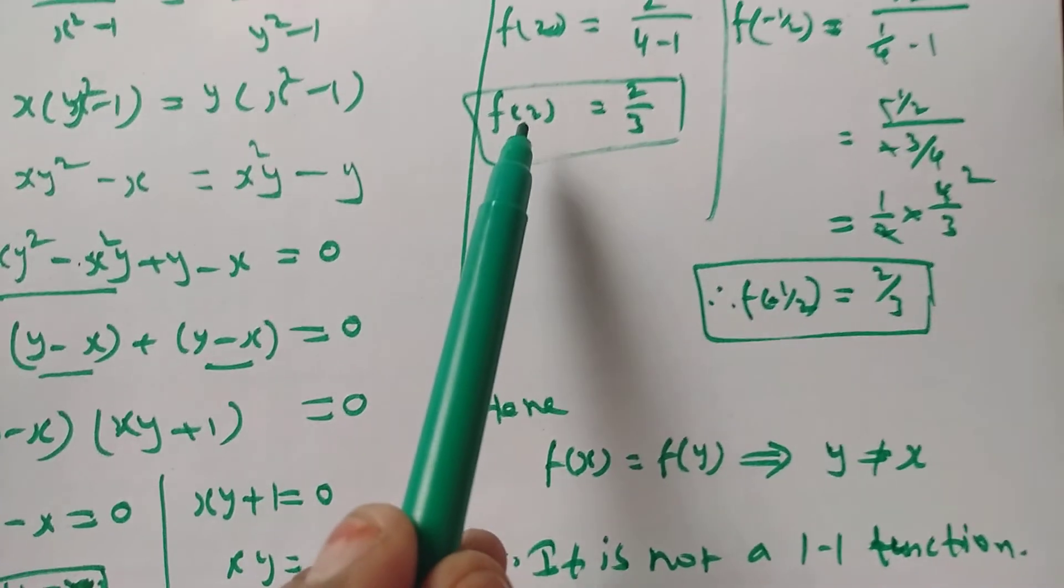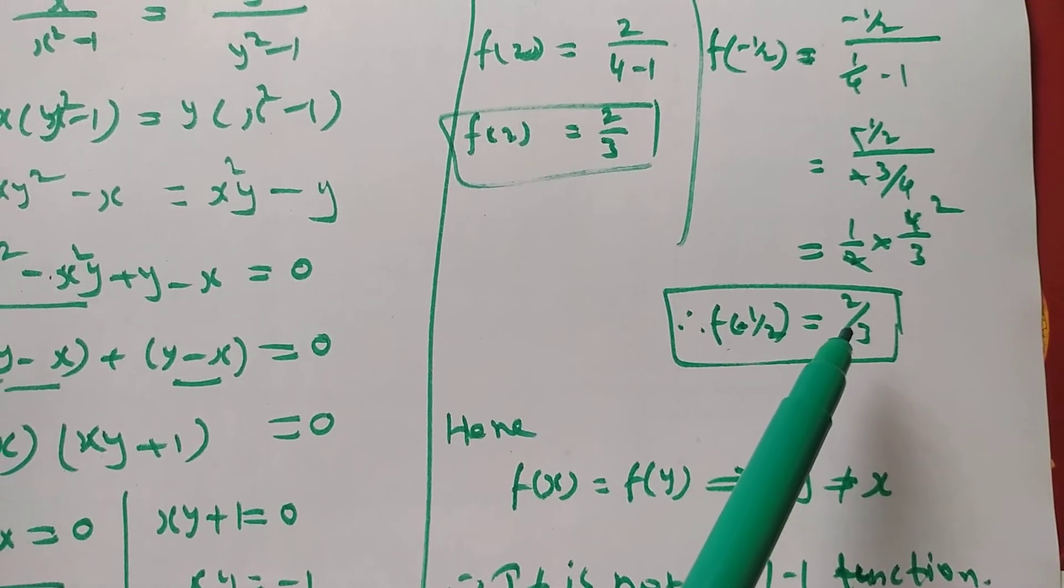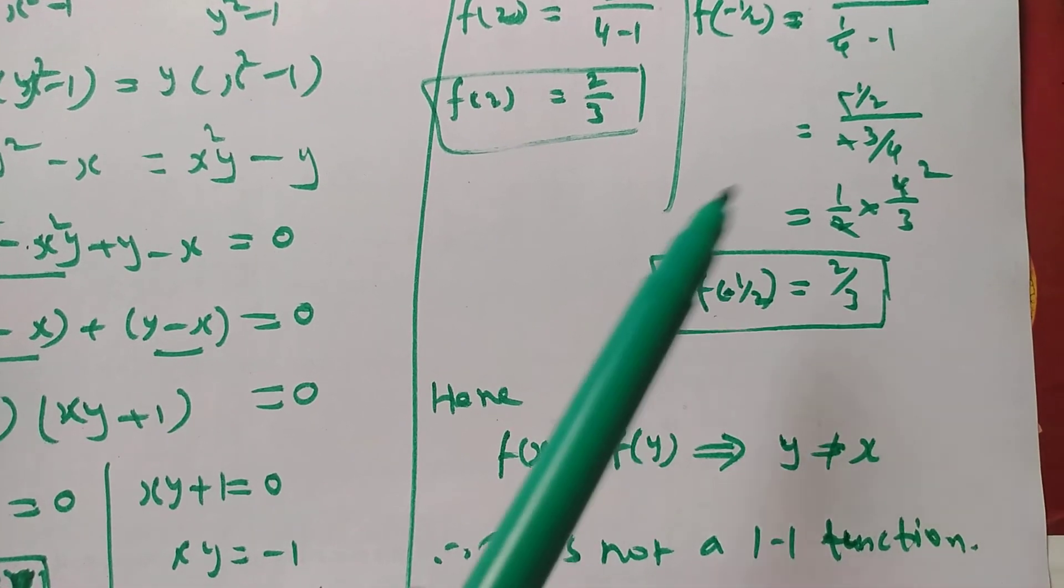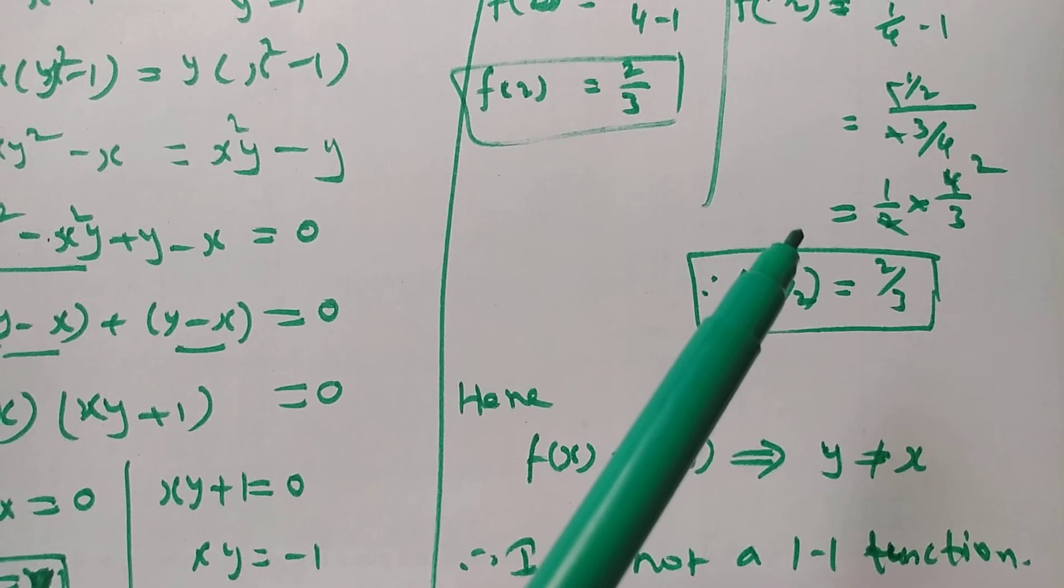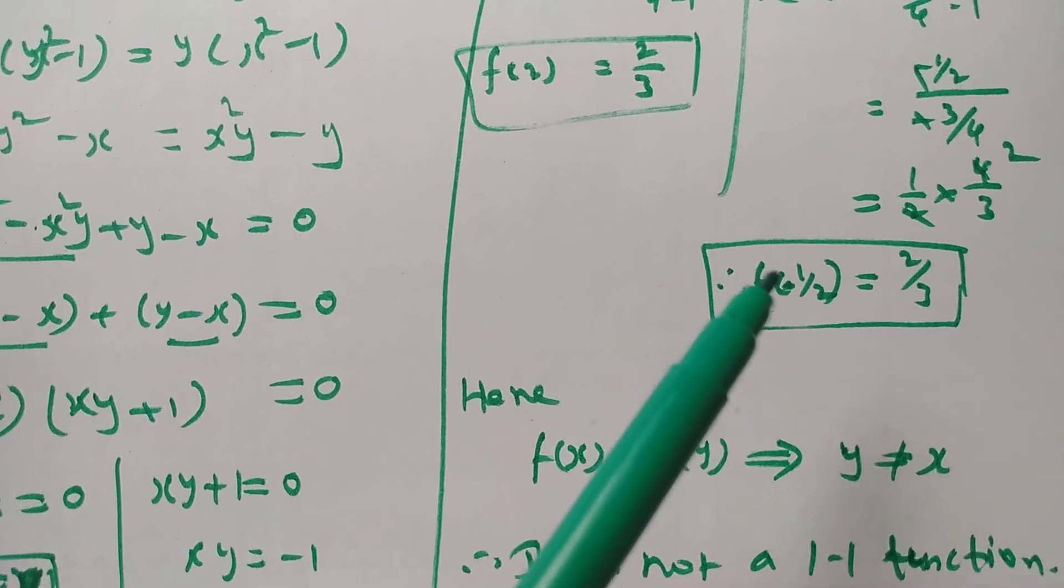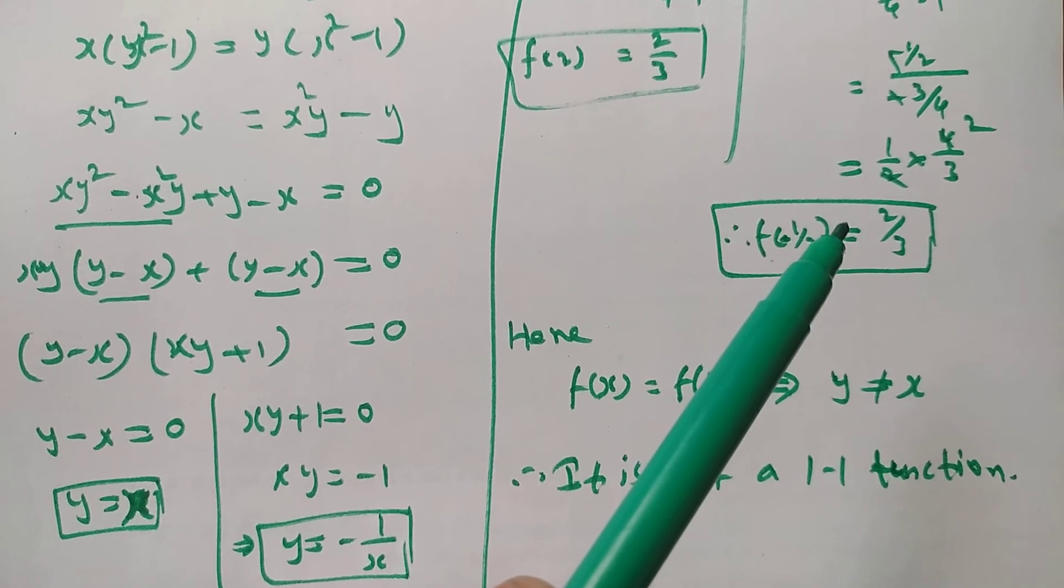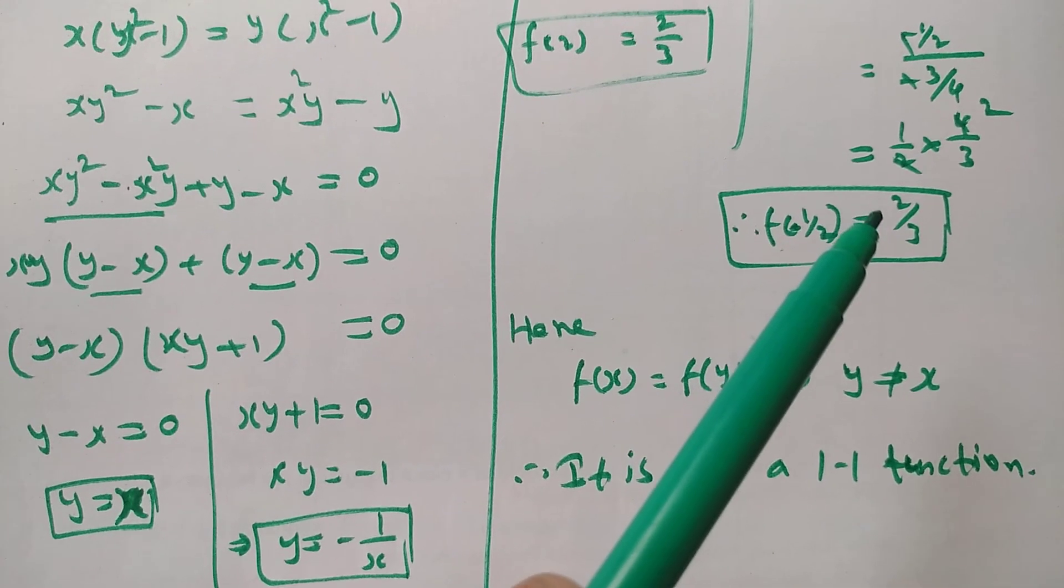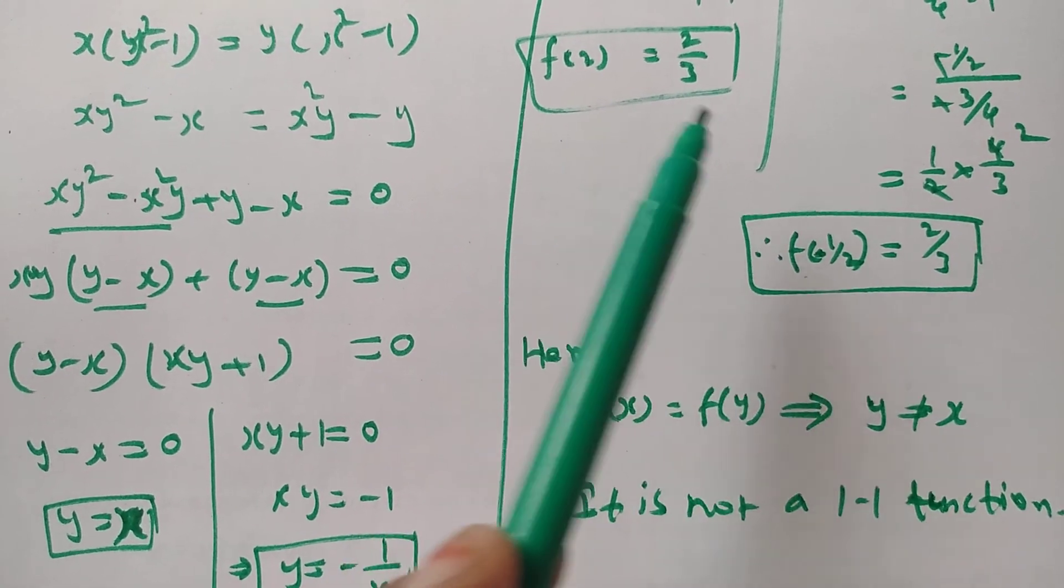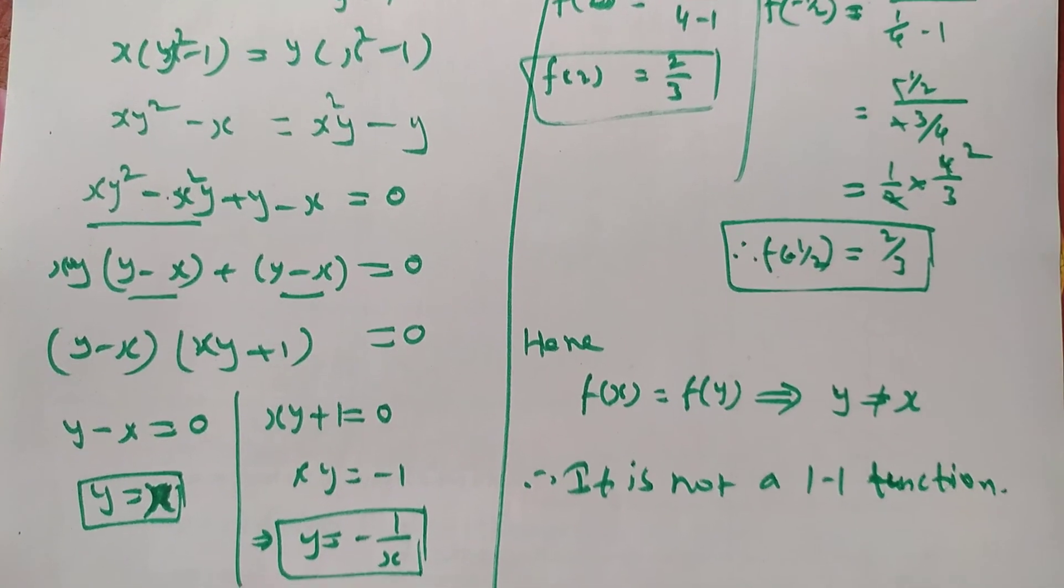Here we have 2 elements: x = 2 has image 2/3, and x = -1/2 has image 2/3. In the domain, 2 elements map to the same image. The 1-1 condition requires every element in the domain to map with different elements in the codomain. Here 2 elements map to the same element in the codomain. Thanks for watching.